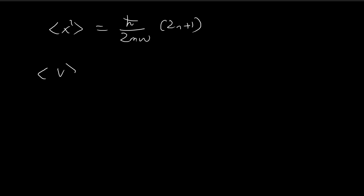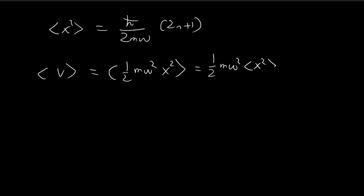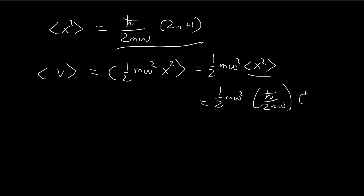Going back to the original problem, the expected value of the potential equals these constants times x squared. We can pull the constants out to get those constants times the expected value of x squared. Substituting in the result we just derived, the constants cancel, and in the end we get one-half times (n + 1/2) ħω.